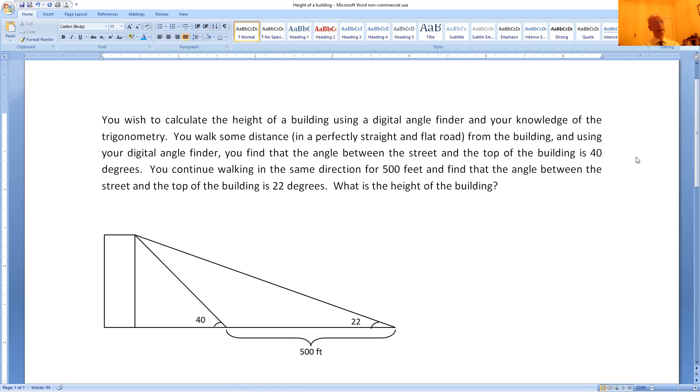After that, you keep walking in the same direction away from the building for another 500 feet, and then you measure the angle again between the surface of the street and top of the building. And the angle is now 22 degrees. And your job is to find the height of the building.